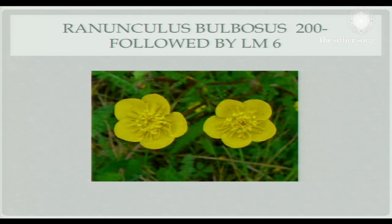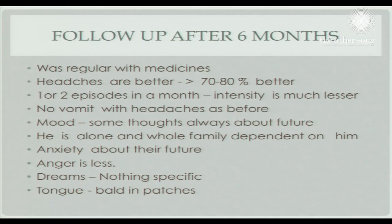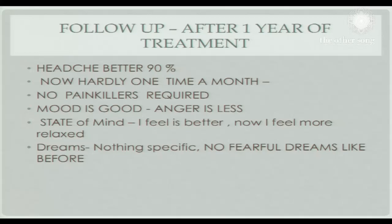You can still fail, no doubt, but the chances are less. And why 200C? Because the body affects the mind — the headache produces emotions and the emotions produce headache. Psychosomatic, mental-body symptoms is level 3, which is 200 potency and LM6. So that was what was given to him. Within a month itself the headaches were better by 40 to 50 percent. After 6 months, 70 to 80 percent better. His entire mind state also getting better — more relaxed, no fearful dreams, and recovered very nicely with this remedy.